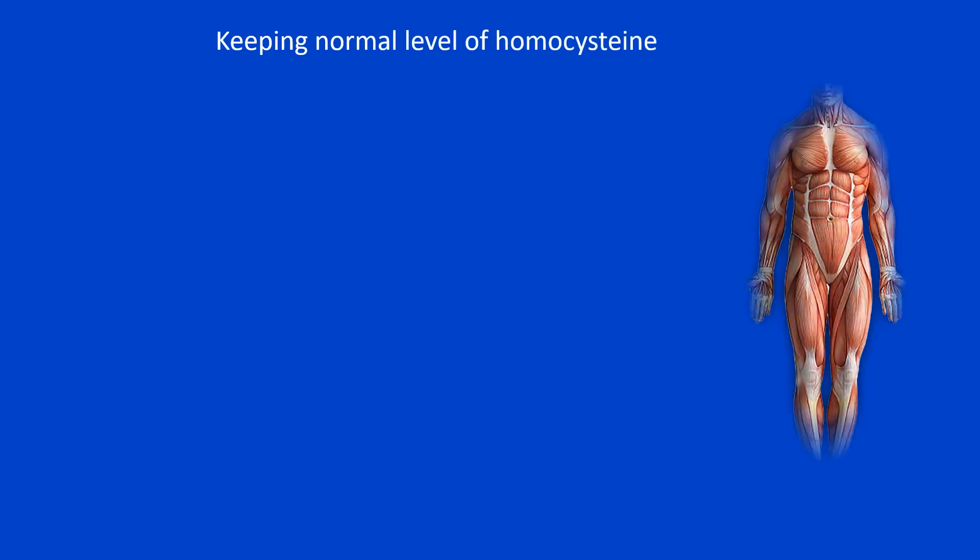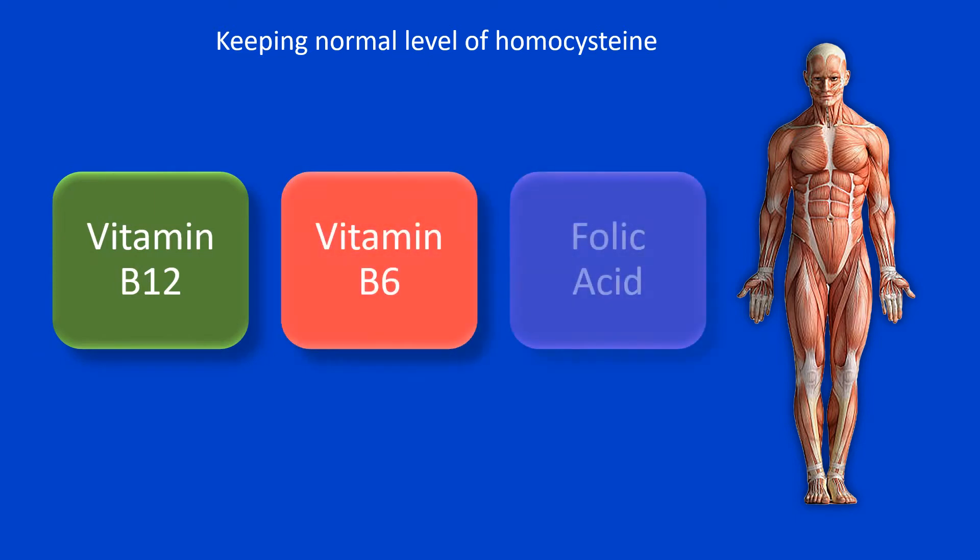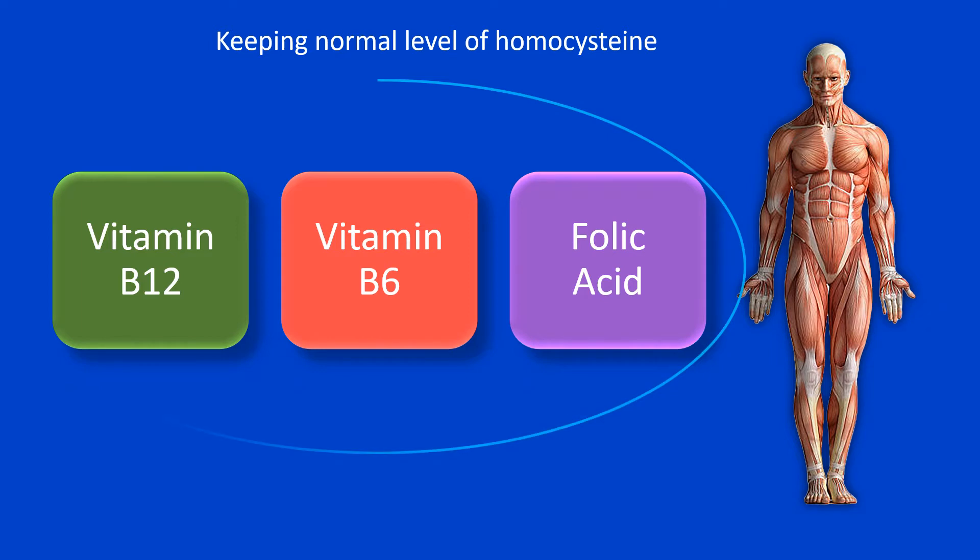Normally, plasma level of homocysteine is kept within normal ranges by the action of vitamin B12, vitamin B6, and folic acid. These vitamins are involved in breaking down homocysteine and converting it into other compounds that your body needs.